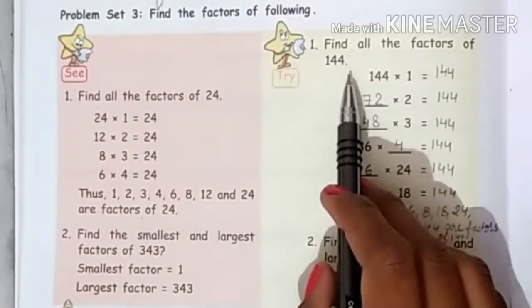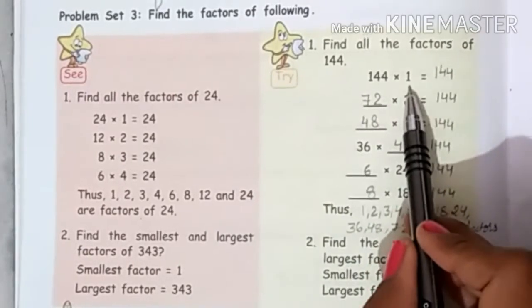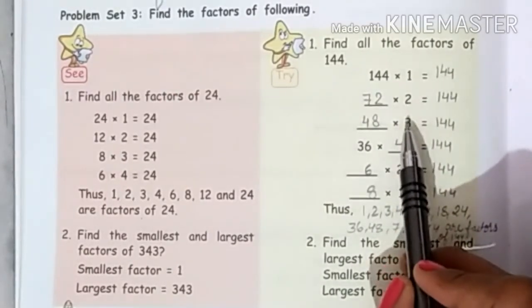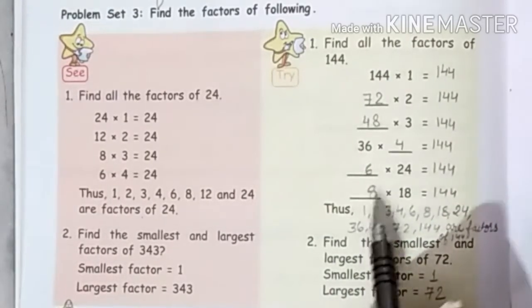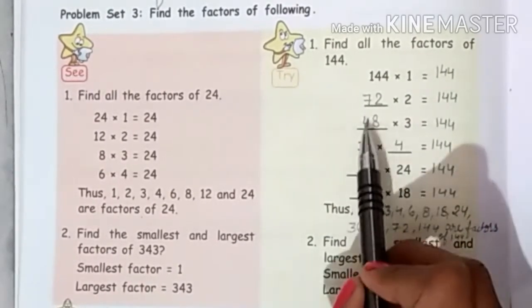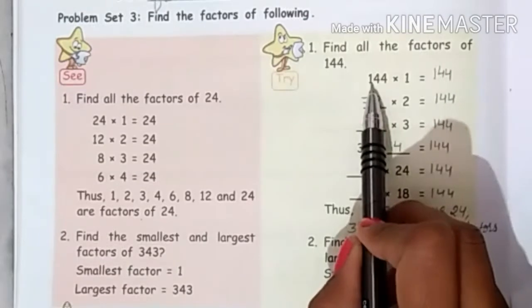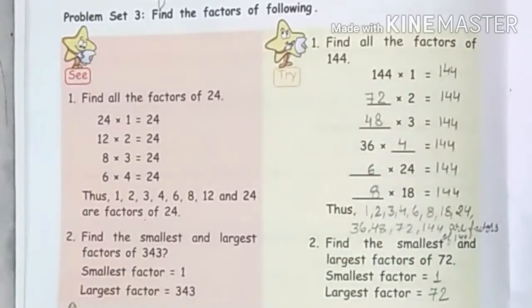Now, all the factors of 144 are: 1, 2, 3, 4, 6, then 8, then 18, 36, 48, 72, and 144. Okay?